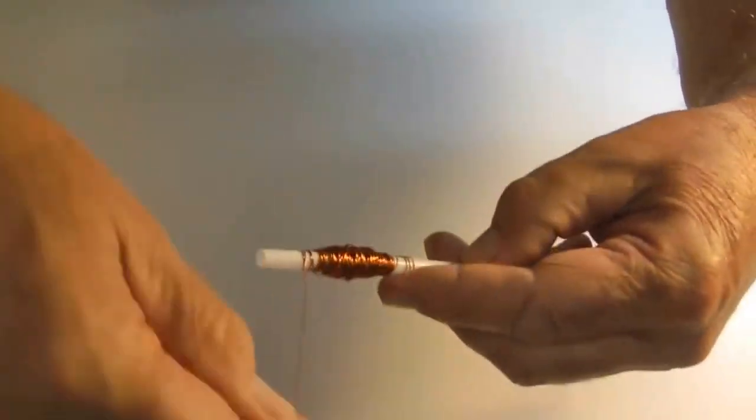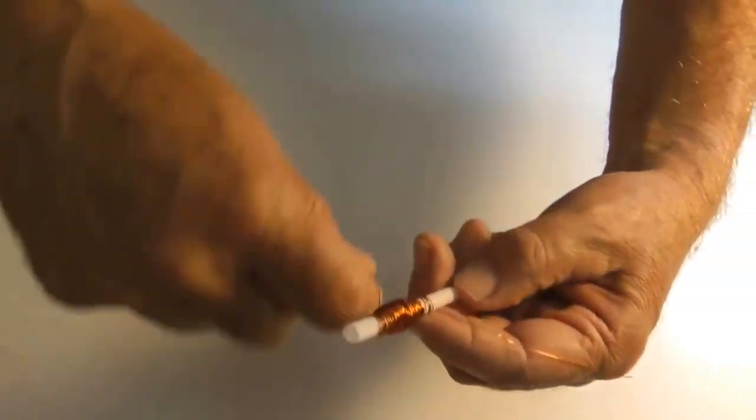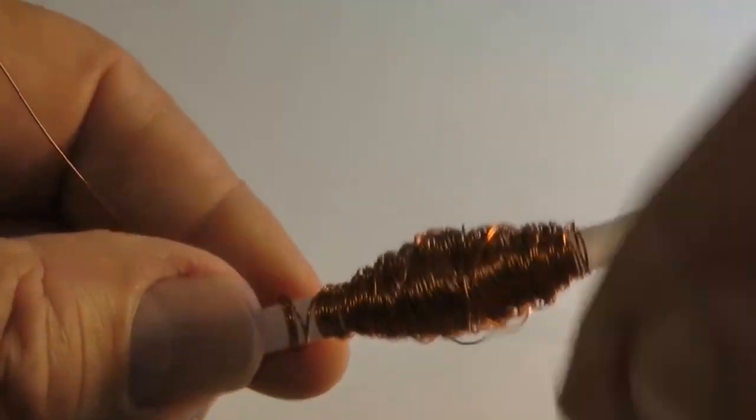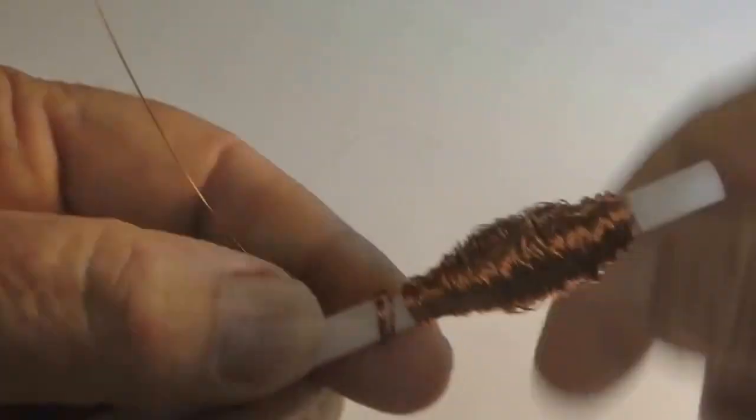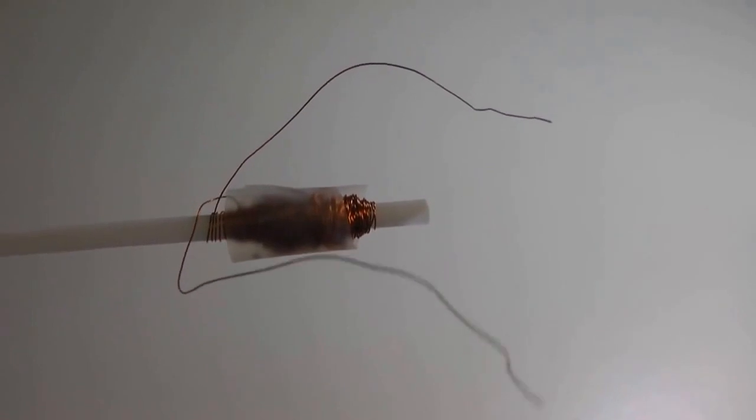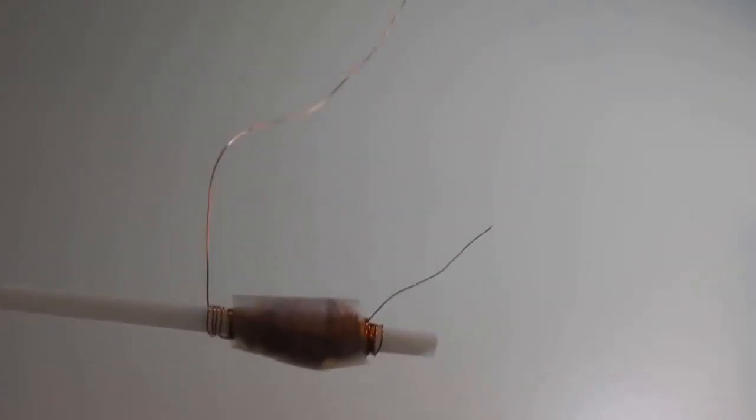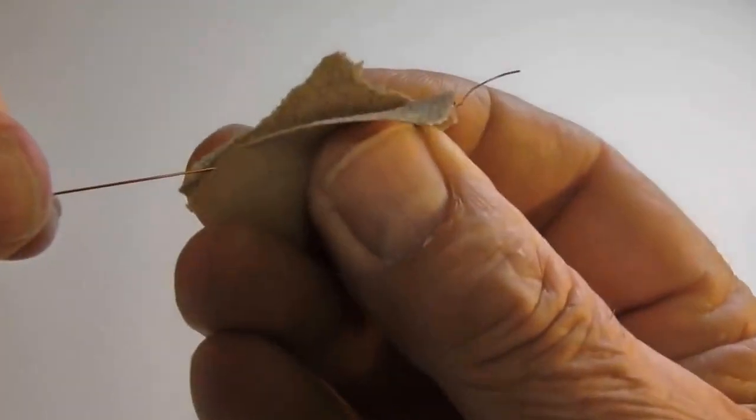I start by wrapping 12 meters of 28-gauge magnet wire close to one end of a straw, creating a coil. I have to leave both ends of this coil exposed. Magnet wire is coated with a clear insulator. I'm using sandpaper to remove this insulation, exposing the bare copper wire.